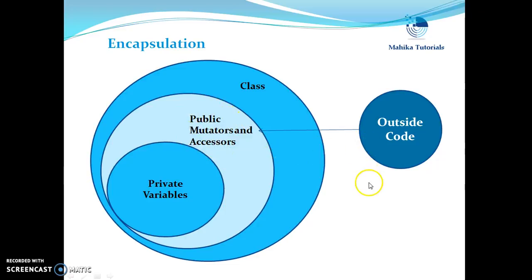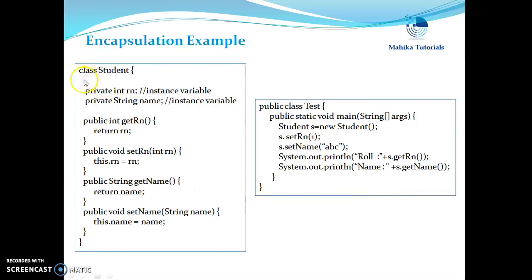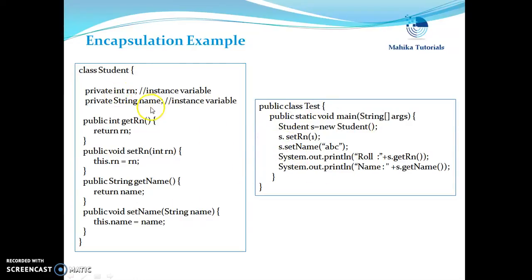Let's take an example. Suppose if we are creating a class Student with two data members, roll number and name. We will declare these data members as private so that they are not accessible outside this class. To make these accessible outside the class, we have given getters and setters, which are often known as mutators and accessors. Suppose if we have a class Test which wants to access the Student class, it cannot access the roll number and name fields directly since they are private.